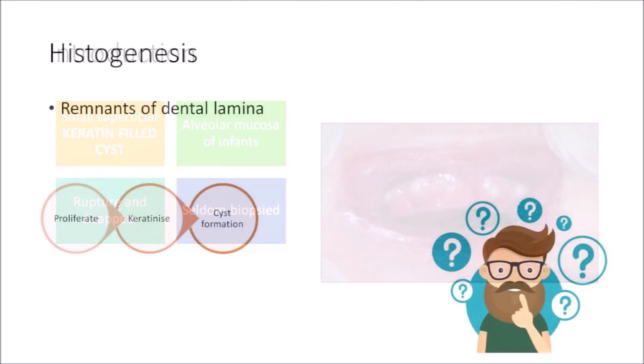This cyst is believed to arise from the remnants of the dental lamina or the cell rests of Serres — a concept that is widely accepted. The dental lamina is believed to retain its ability to proliferate even after it undergoes involution. The remnants then undergo proliferation, keratinize, and undergo cystic transformation, giving rise to the gingival cyst of newborn.